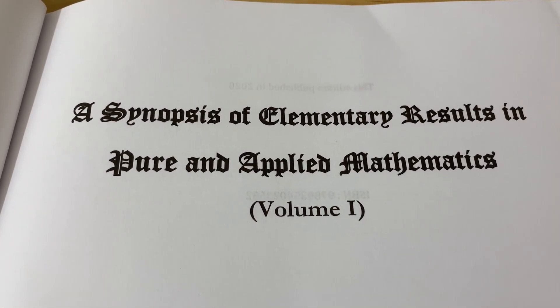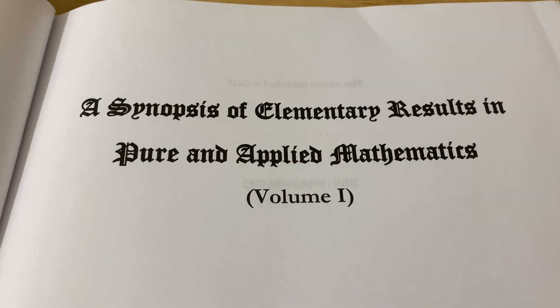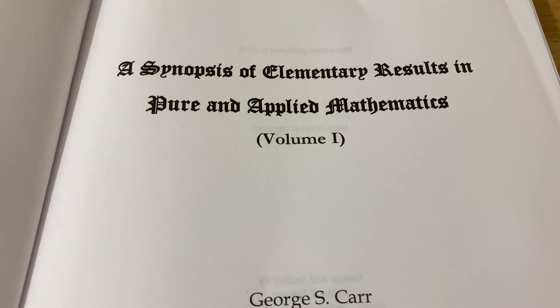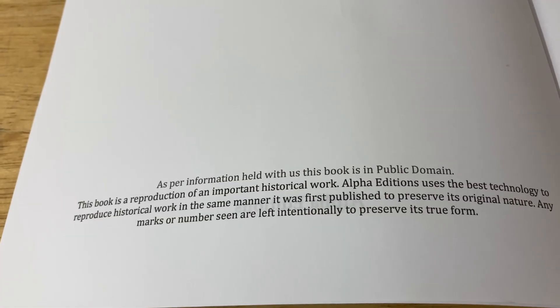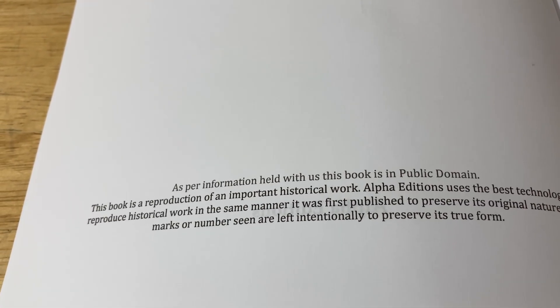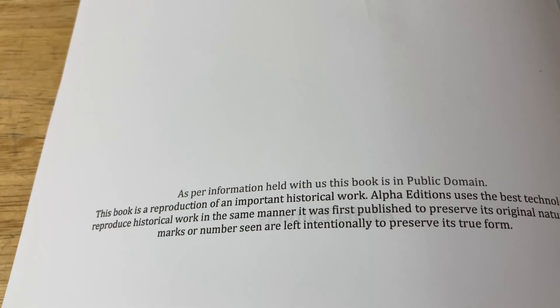A Synopsis of Elementary Results in Pure and Applied Mathematics, Volume 1, George S. Carr. And this is obviously a reprint. This book is free and in the public domain. I will try to leave links in the description to free versions and also print versions in case you're interested.